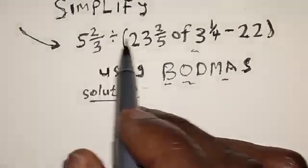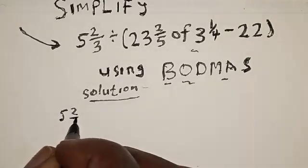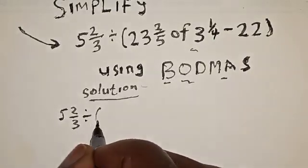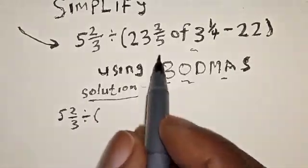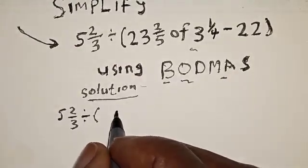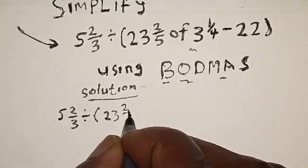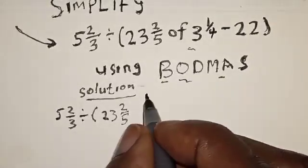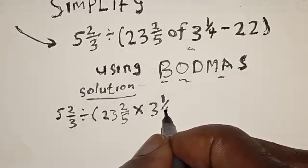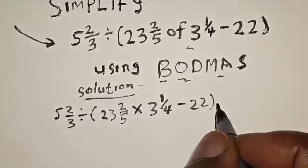The equation is: 5 and 2/3 divided by — open bracket — here we have 'of', so 23 and 2/5 of 3 and 1/4. We cannot change 'of' to multiplication yet inside the bracket. We have 23 and 2/5 times 3 and 1/4 minus 22. Close bracket. The first operation is bracket and 'of' inside the bracket, so we change 'of' to multiplication.